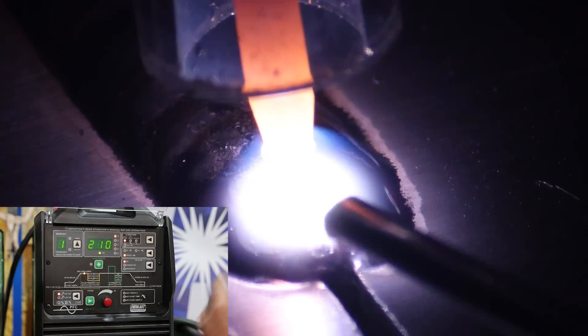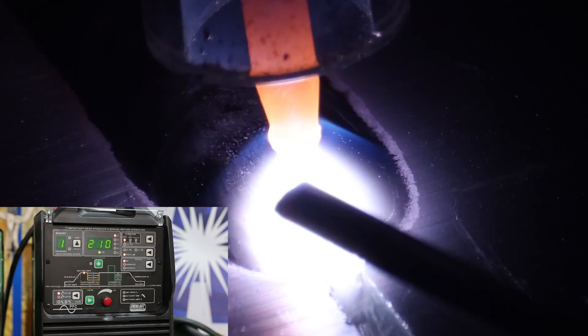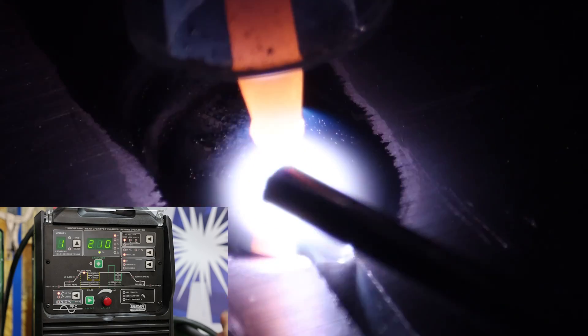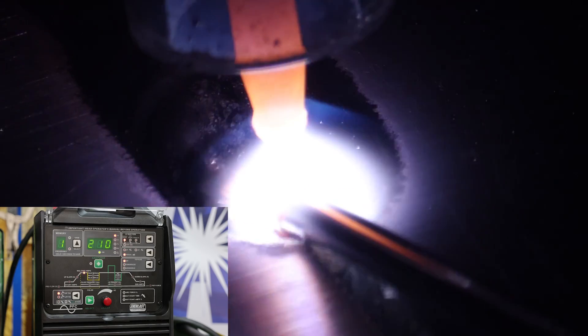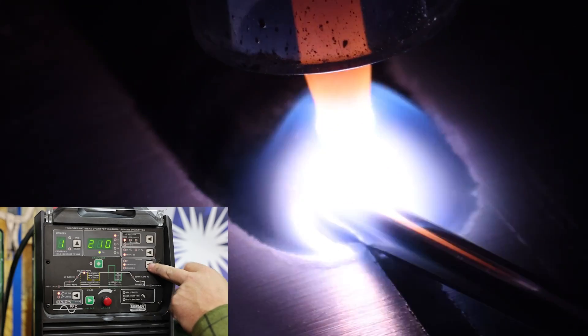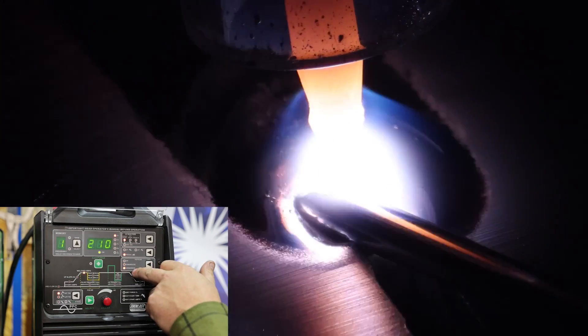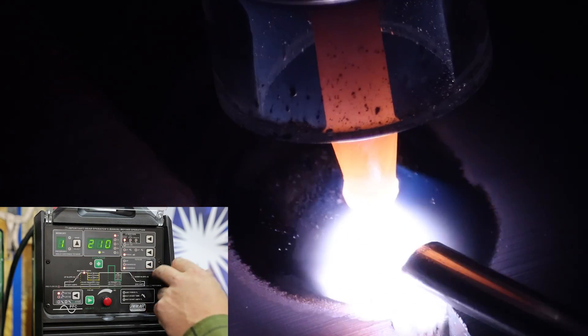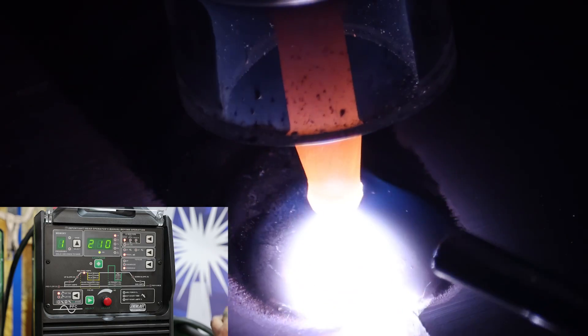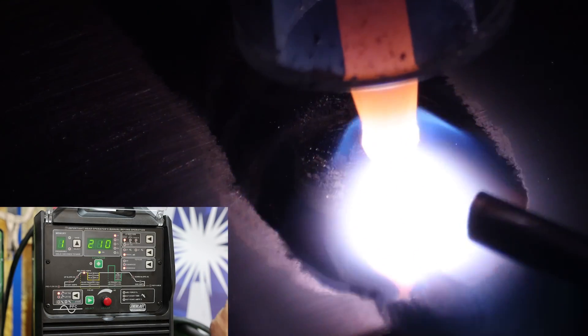Alright, so today we're running a PowerTig 210 EXT. Now this is the smallest EXT that Everlast makes. So for welding 3/16ths or quarter inch plate, this machine is going to be underpowered. But going through our TIG pulse settings, standard AC, DC pulse, this is what everybody wants to know about: advanced AC. Using advanced AC, I'm going to show you how you can use a 210 amp machine to weld quarter inch or even thicker material.